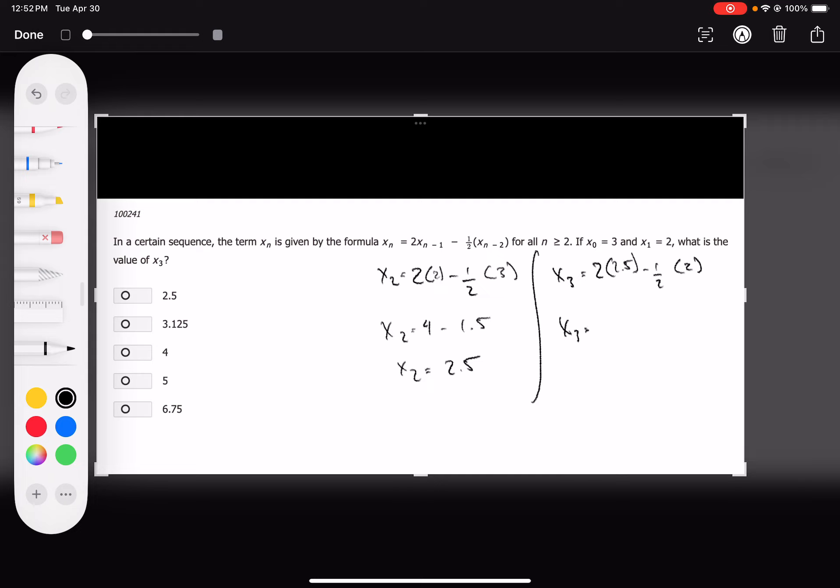So now we just do this out. This is 5 minus 1, x of 3 equals 4, and we're done.